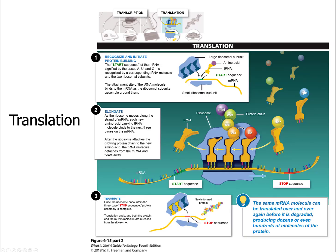The translation process is straightforward. The two-piece ribosome snaps onto the messenger RNA, which slides through it. As transfer RNAs come in reading groups of three — the codon and anticodon — the proper amino acid is added. If it matches, the amino acid is added to the chain. This continues until the ribosome reaches a stop sequence, signaling it to drop off.